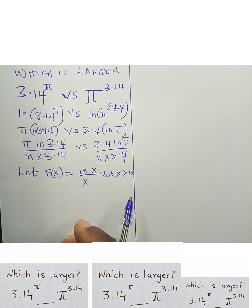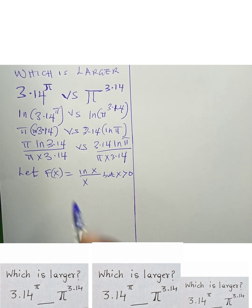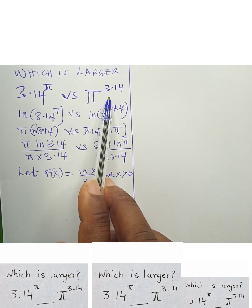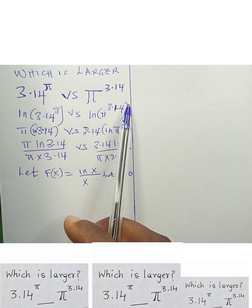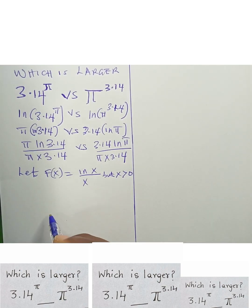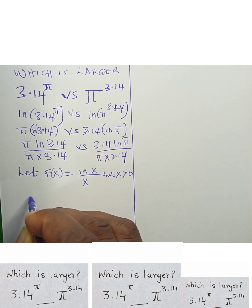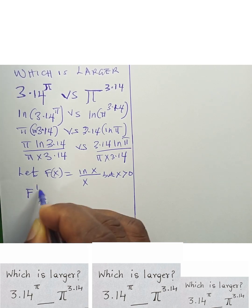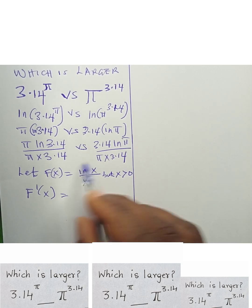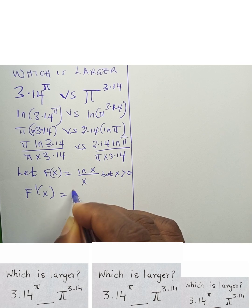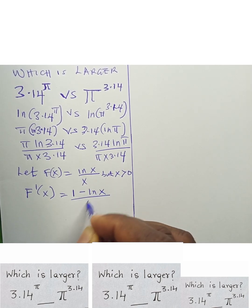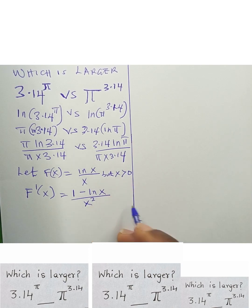The next thing we should ask ourselves is whether the function is increasing or decreasing. If the function is increasing, the left-hand side will be greater than the right-hand side; if decreasing, the right-hand side is smaller. Now let us find the derivative of f(x). Differentiating using the quotient rule, f'(x) = (1 − ln x) / x².